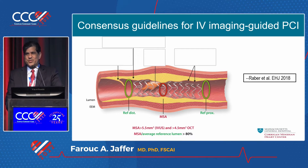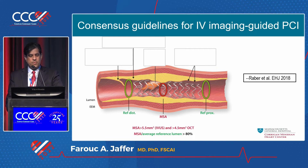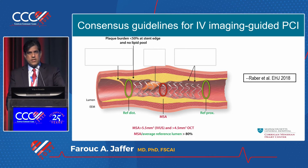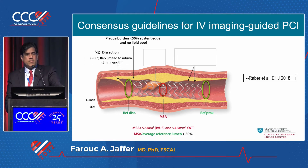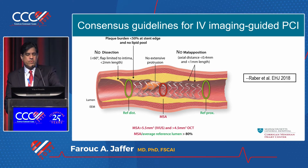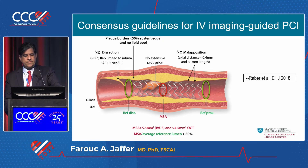The consensus imaging guidelines define minimum stent area criteria: greater than 5.5 mm² for IVUS and greater than 4.5 mm² for OCT. A more complete formula targets stent expansion greater than 80%, calculated by dividing stent area by reference luminal area. Other key criteria: avoid plaque burden landing zones less than 50%, avoid significant dissections or cover them, address tissue prolapse — better seen by OCT — and avoid severe malapposition greater than 400 microns over a one-millimeter length.